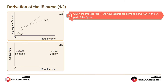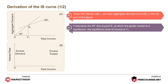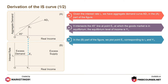Given the interest rate I1, we have aggregate demand curve AD1 in part A of the figure. It intersects the 45-degree line at point E1, at which the goods market is in equilibrium. The equilibrium level of income is Y1. In part B of the figure, we plot E1 corresponding to I1 and Y1.